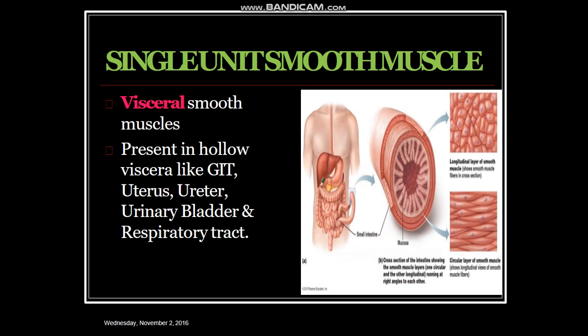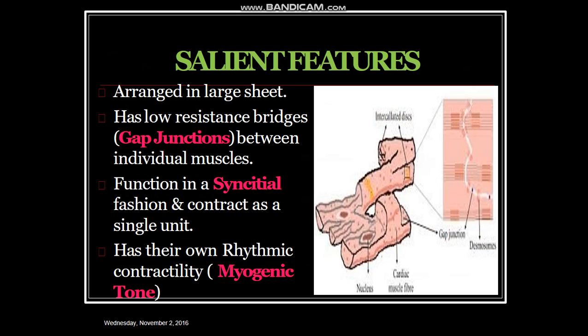Single unit smooth muscle, also called visceral smooth muscle, is present in hollow viscera like the gastrointestinal tract, uterus, ureter, urinary bladder, and respiratory tract. Features include gap junctions, desmosomes, integrated nucleus, arranged in larger sheets, with low resistance bridges and gap junctions between individual muscles. They function in a syncytial fashion and contract as a single unit.